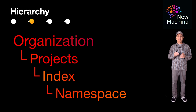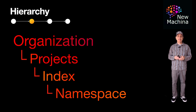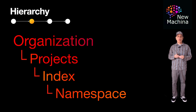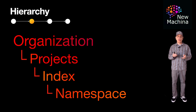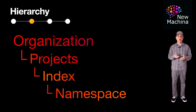Namespaces are useful when you want to segregate your data for different environments such as dev, QA, or production. Multi-tenancy is another use case for namespaces. Multi-tenancy is a software architecture where a single instance of a system serves multiple customers or tenants while ensuring data isolation between them for privacy and security. Namespaces enable you to implement multi-tenancy by segregating different users' or customers' vector data all within the same index.